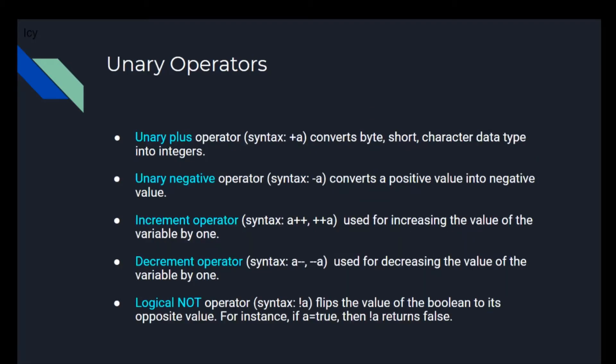Now we have our unary operators. We have the unary plus operator, the unary negative operator, the increment operator, the decrement operator, and the logical not operator. The unary plus operator converts byte and char type data into integers. The unary negative operator converts a positive value into negative values. The increment operator increases the value of a variable by one. The decrement operator decreases it by one. The logical not operator flips the value of a boolean to its opposite — for instance, if a equals true, then exclamation mark a returns false.